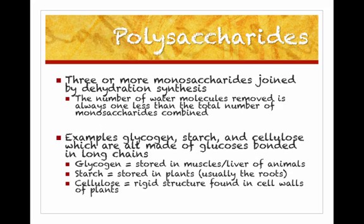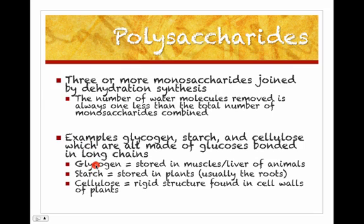When people are running a marathon and eat a pasta dinner beforehand, what they're doing is eating a lot of starch. Starch is the polysaccharide you find in plants. When we eat things like pasta or potatoes, they're very starchy, and your body then converts the starch to glycogen. Both are pretty much the same molecule — just in different organisms: glycogen being in animals, starch being in plants.